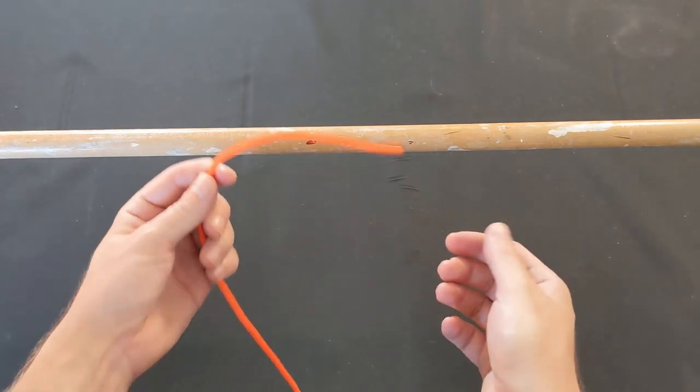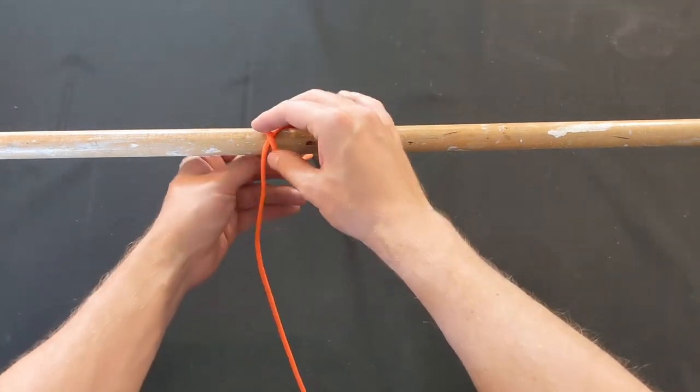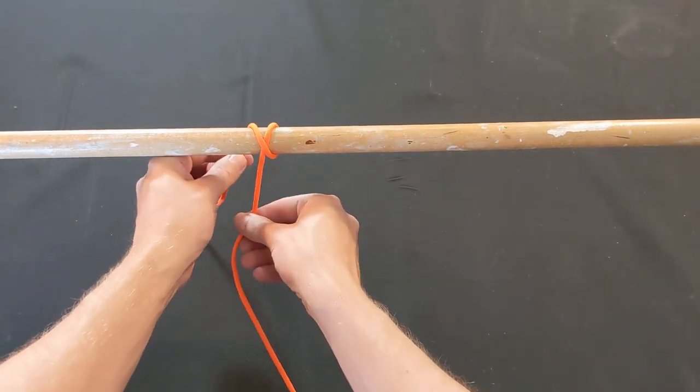To tie a constrictor knot around an object, wrap your line over the object and back underneath it. Then bring the line over the object again, creating an X over the line.